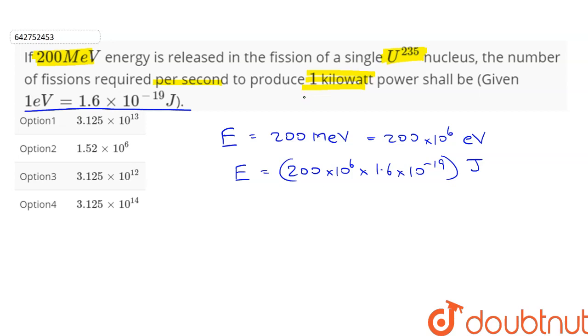We need to produce 1 kilowatt of power, that means 1 kilojoule per second. So in one second we need to produce an energy of 1 kilojoule, which is equal to 1000 joules.